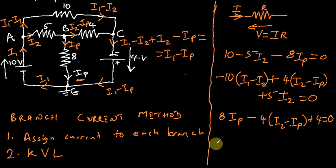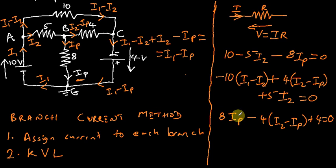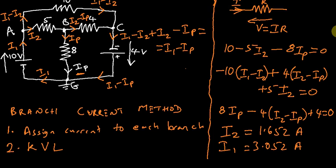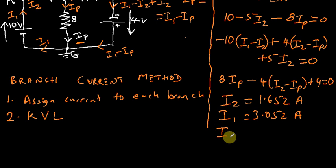Hello again. At the end of the last video, we used the branch current method to come up with three equations. The task was to find the values of I1, I2, and Ip. In reality, all we really need to find is Ip, but it's a good exercise to find I1, I2, and I3. You should have arrived at I2 as 1.652 amperes, I1 as 3.052 amperes, and Ip as 0.2174 amperes.